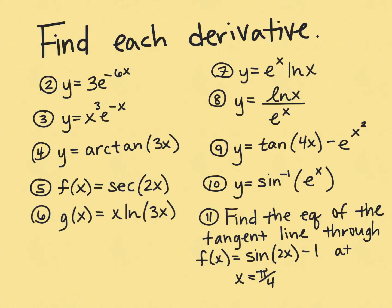Here are numbers 2 through 11 — written down, numbered, neat — show all the work to find the derivative for each. Go ahead and pause the screen, write these down, and find each derivative. For number 11, this is a tangent line problem; if you need to look back at how to find the tangent line, you have plenty of resources available. Have fun!